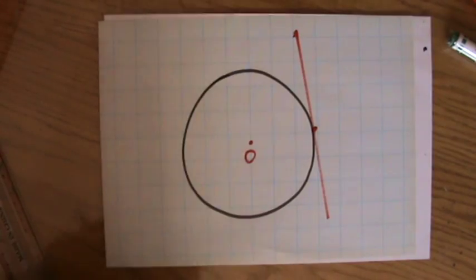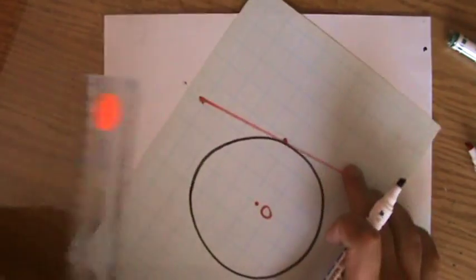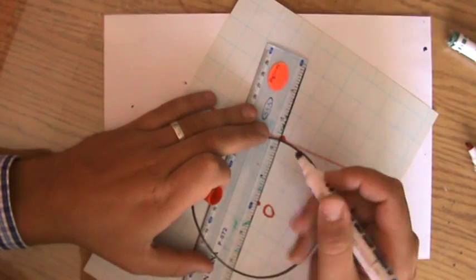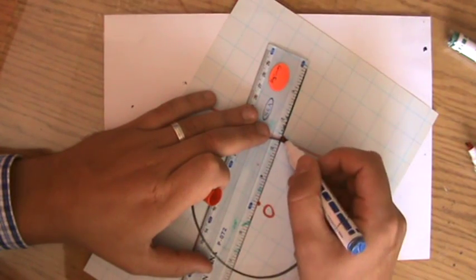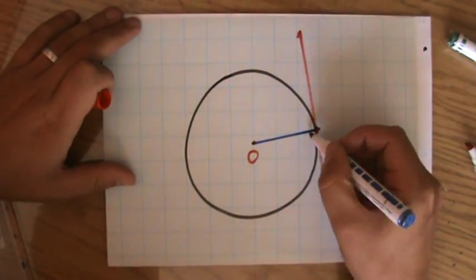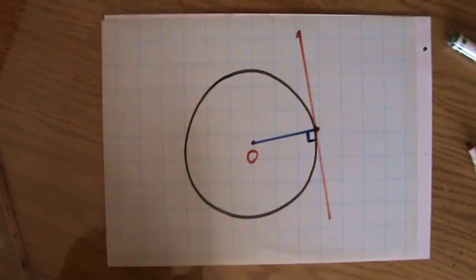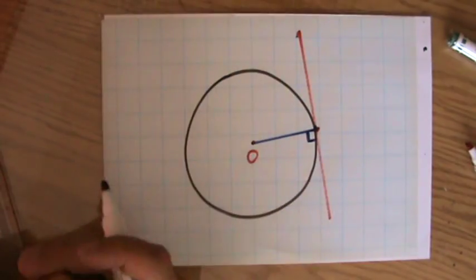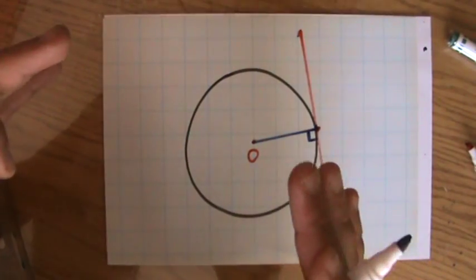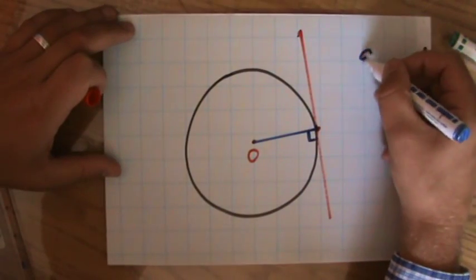Now what is important about tangents? Two things you need to know. First of all, the angle between the radius of the circle and the tangent, so from the center of the circle to the circumference, the angle it makes with the tangent is always a right angle. So that is 90 degrees perpendicular. That's the first thing you need to know. So the angle between a radius and a tangent is always 90 degrees.